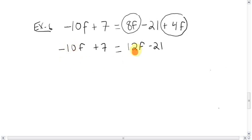Negative 10, the opposite is positive 10f. Add 10f on this side. When that happens, the 10f's are gone. We're left with 7. The equal sign is all lined up. You get 22f minus 21.